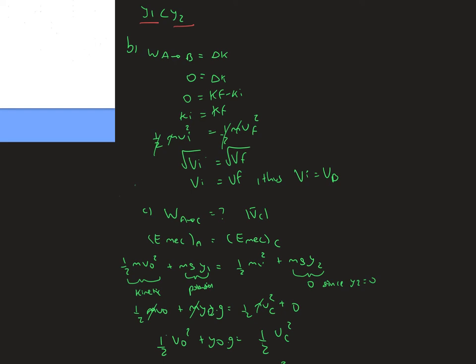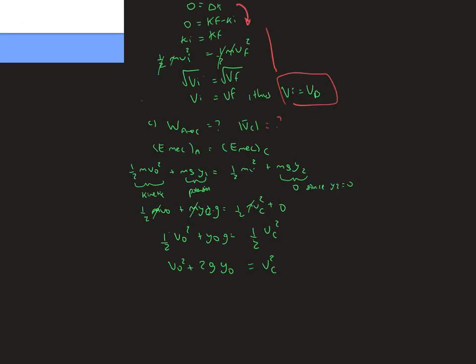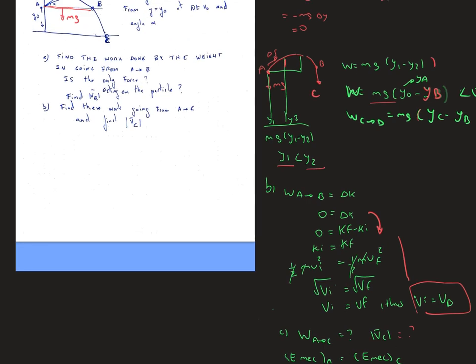From the previous statement that the work from A to B equals 0, we could say that the kinetic energy change is equal to 0. Then, doing some algebra, we can conclude that the velocity of B is going to be the initial velocity, which is what we need to solve the next question.